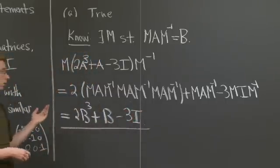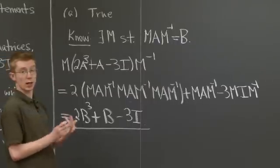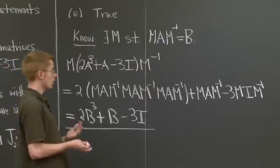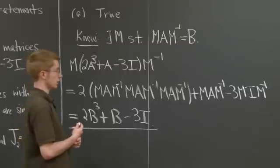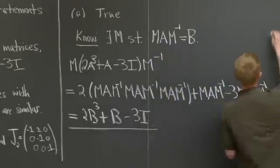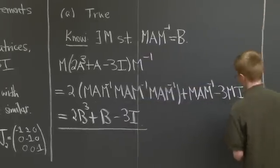And this is sort of a general remark that if you have matrices A and B that are similar, then any polynomials in these matrices A and B will be similar. It's the exact same justification.